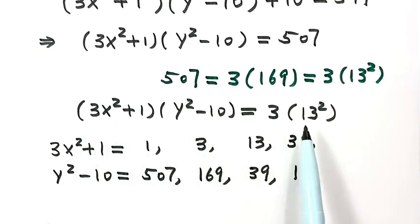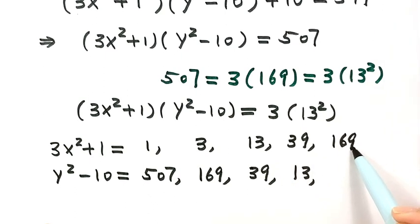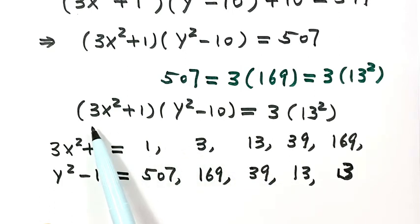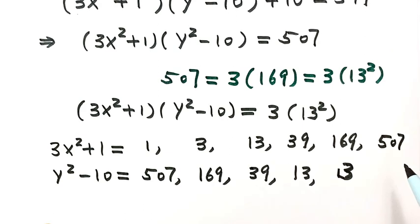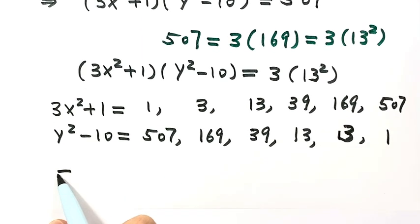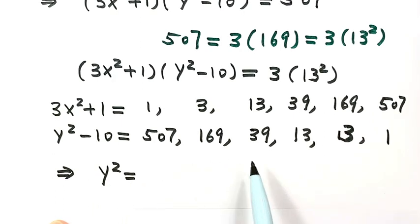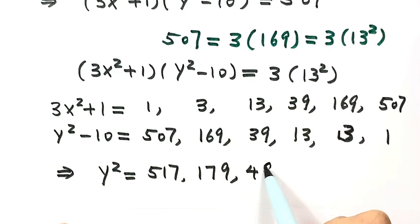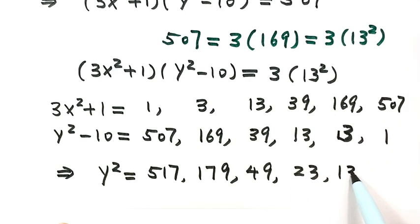Case 5: first factor equals 169 (13 squared), second factor equals 3. Case 6: first factor equals 507, second factor equals 1. Now for the second line, y squared minus 10 equals each of these six values. Moving negative 10 to the right hand side, y squared equals: 517, 179, 49, 23, 13, and 11.